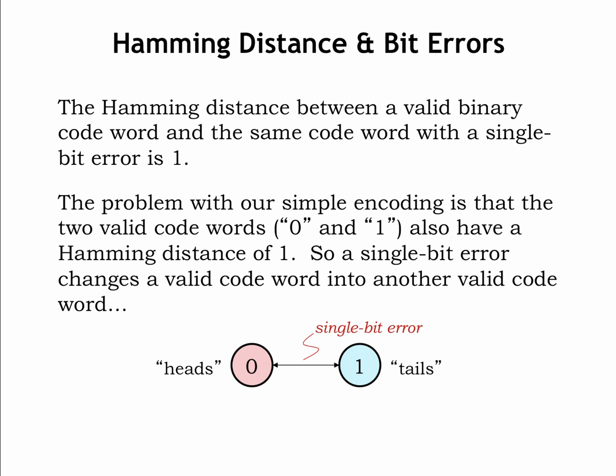We'll show this graphically, using an arrow to indicate that two encodings differ by a single bit, in other words that the hamming distance between the encodings is 1.